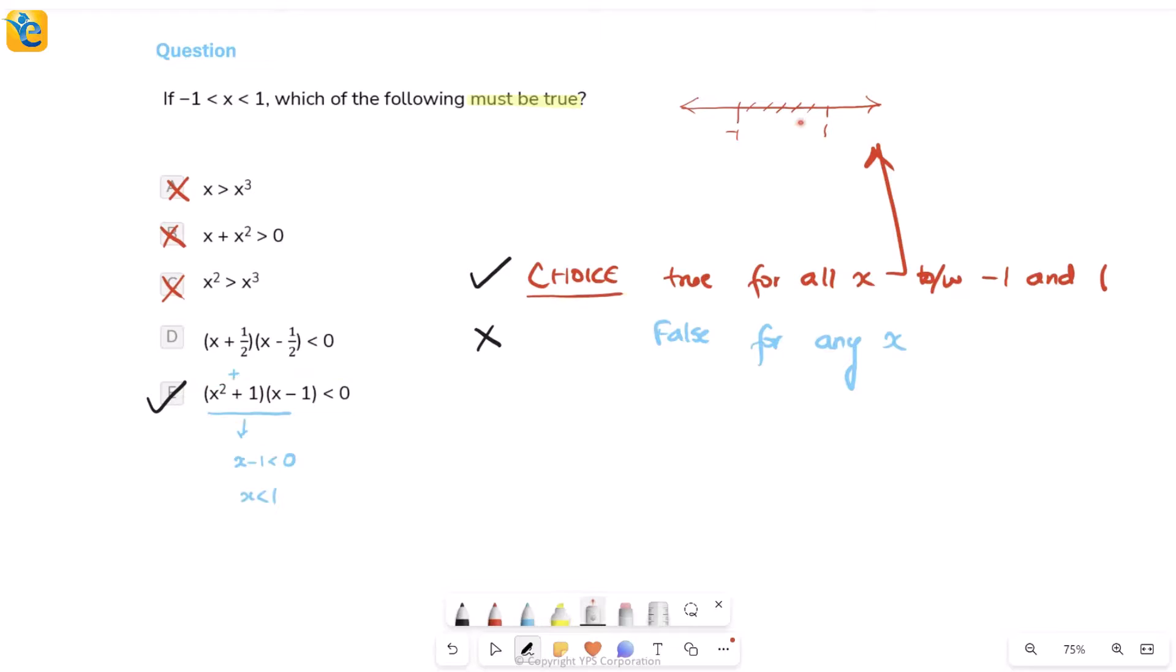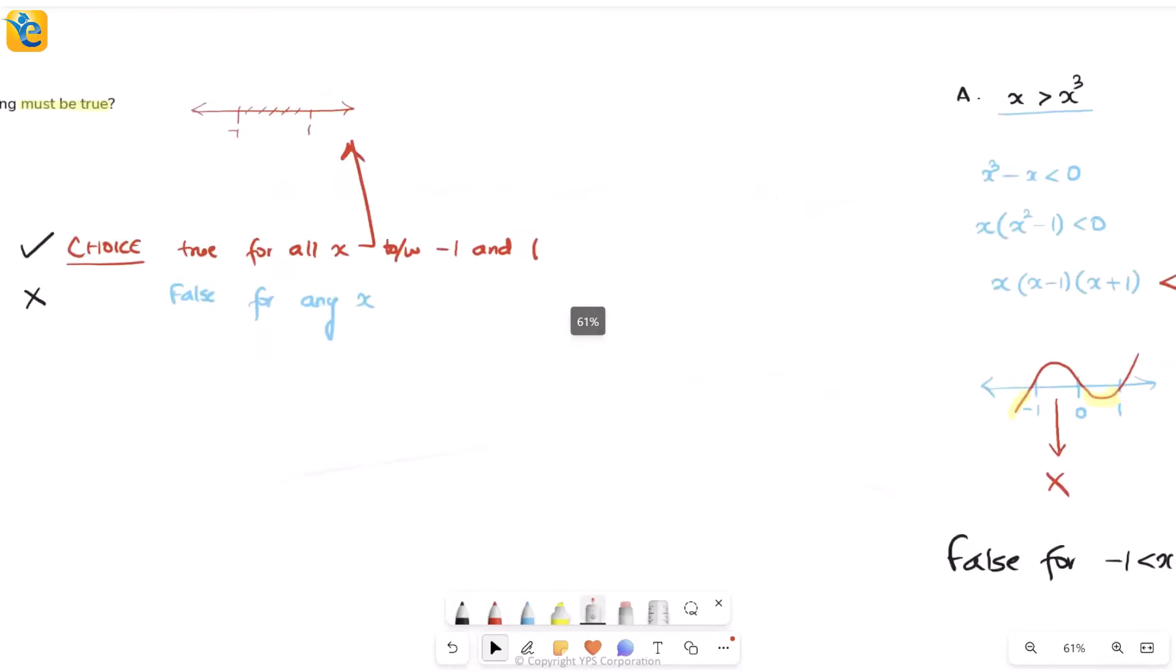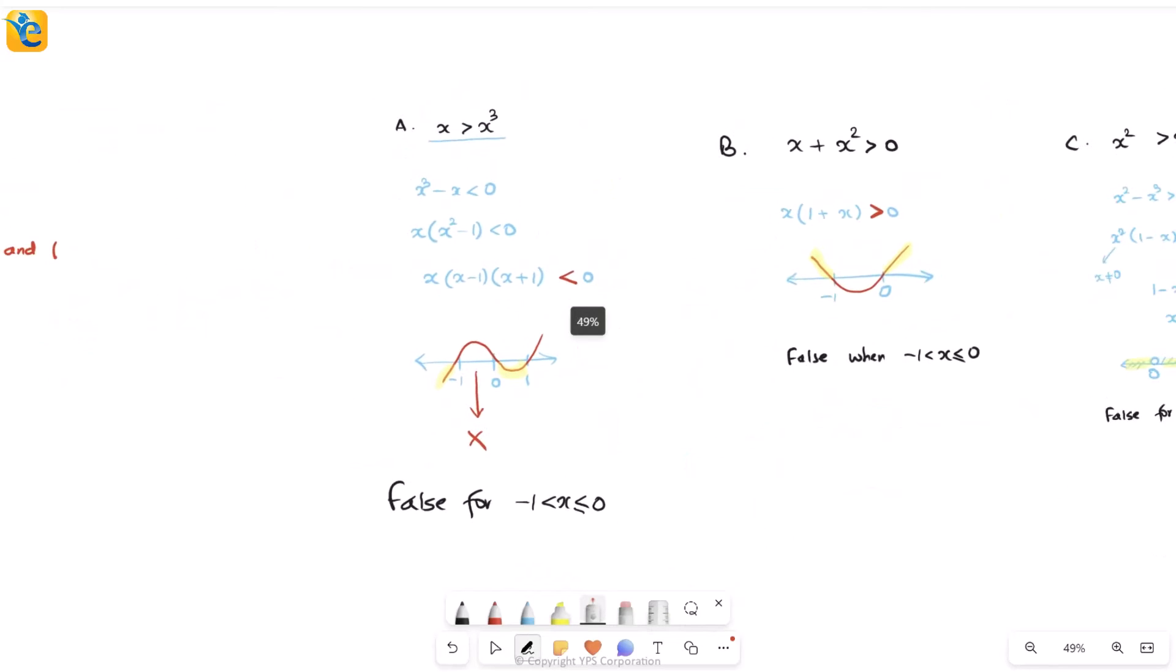Now, let's summarize the question. We began by thoroughly understanding the question, carefully translating what the question was asking of us. There was this one given information which we visualized in the form of a number line. Then we had to look for the one choice which must be true for this range of x. So you were looking for the choice which is true for all x in this range. And that helped us be very clear about the fact that if I find a choice to be false for even a single value in this range, then that choice will be wrong.